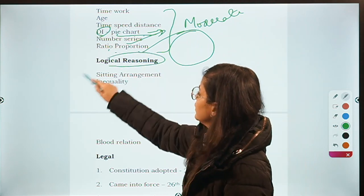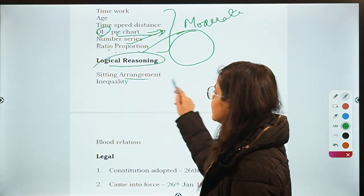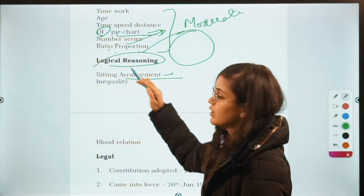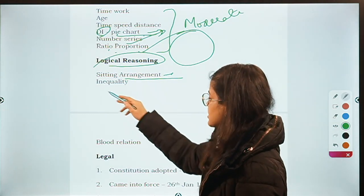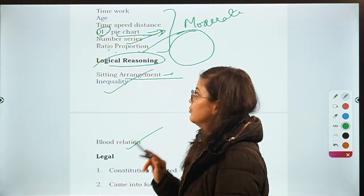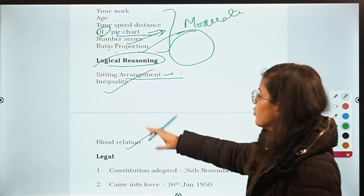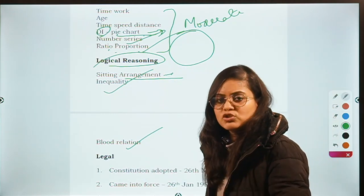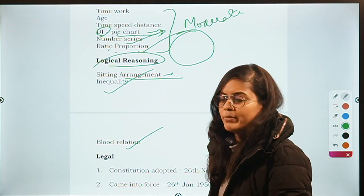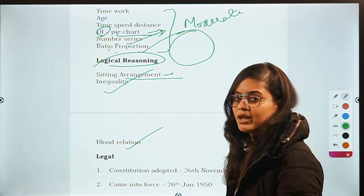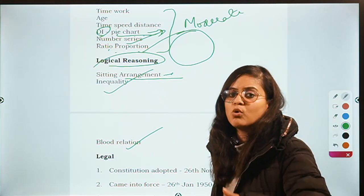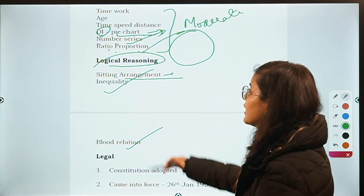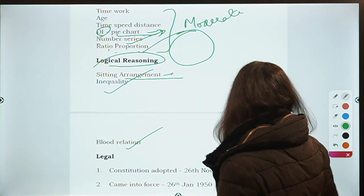Moving on to Reasoning. Reasoning had sitting arrangements — questions came from sitting puzzles. Then inequality was there and blood relations was there. Apart from this, there might be other categories also. You can mention the same in the comment box for the help of everyone else, especially people who are going to appear for this exam next year.